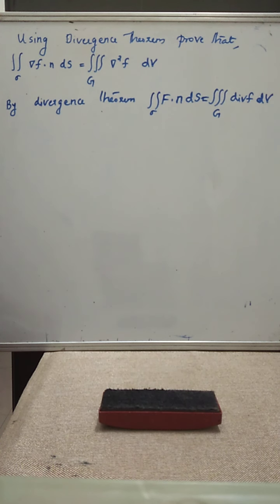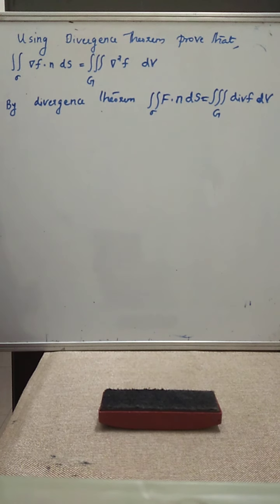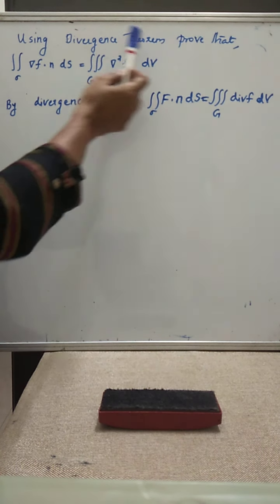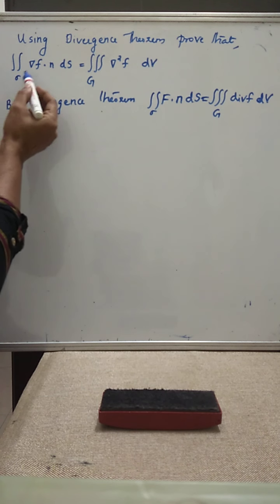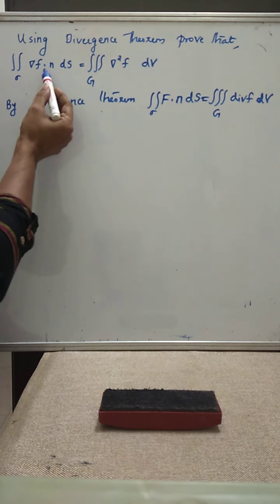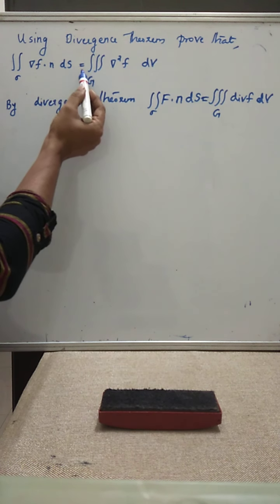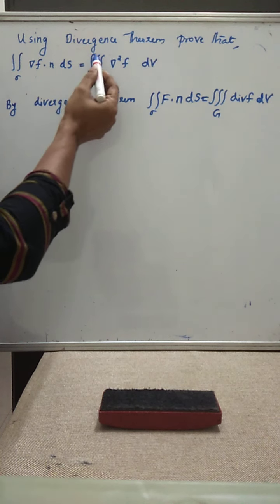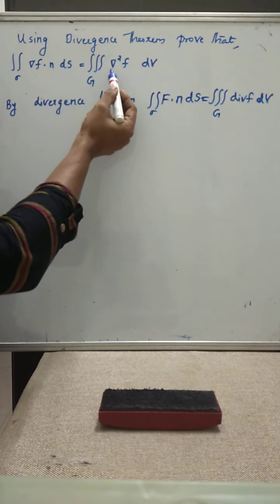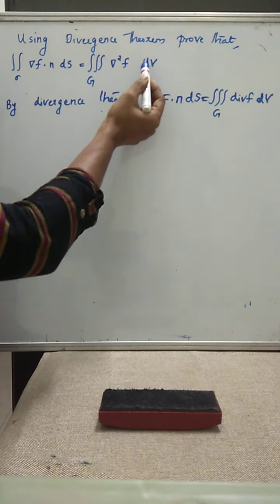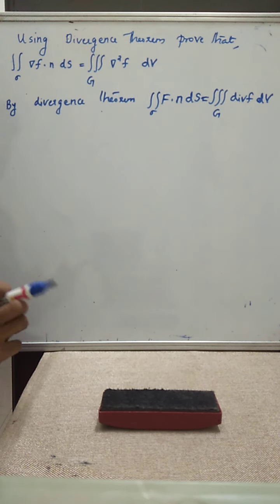Consider the problem. Using the divergence theorem, prove that the double integral over sigma of del f dot n dS is equal to the triple integral over G of del squared f dV.